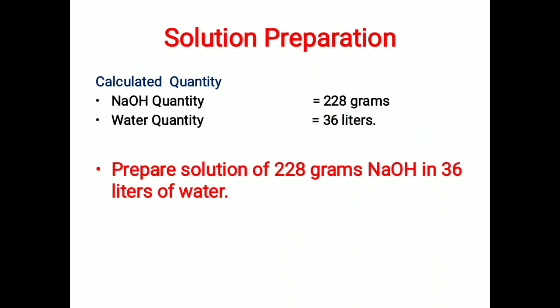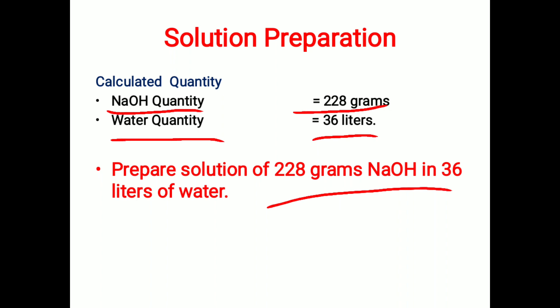Now we will make the solution using the calculated quantities. The NaOH quantity calculated is 228 grams, and the water quantity is 36 liters. For preparation of the solution, we mix 228 grams of sodium hydroxide in 36 liters of water.